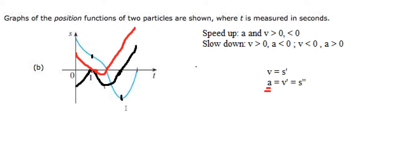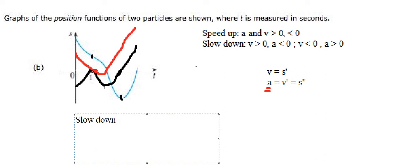Now we can analyze the speed up and slow down intervals. From zero to one, the acceleration is positive but the velocity function is negative — so that's speed up. From one to two, the acceleration is negative and the velocity is also negative — so that's also speed up.